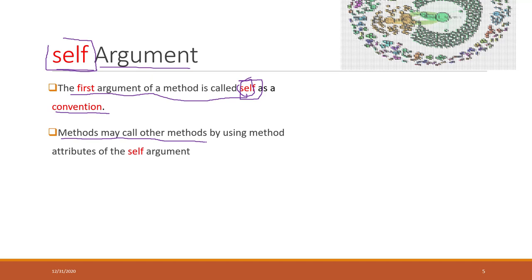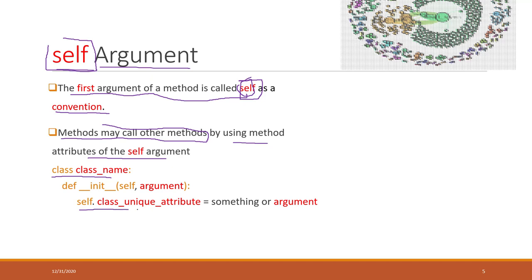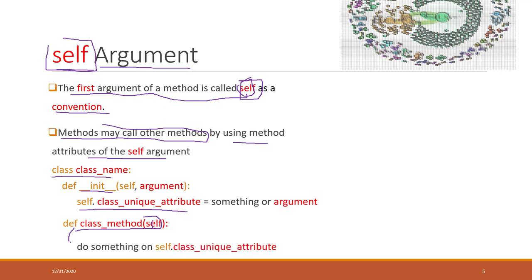Methods can also call other methods or attributes within the object by using `self`. For example, if we have multiple methods within the class and we want to call another method or attribute, we can use `self.attribute_name` or `self.method_name`. Within this class, if you want a method to access an attribute from another method, you use `self` dot that attribute or method name.